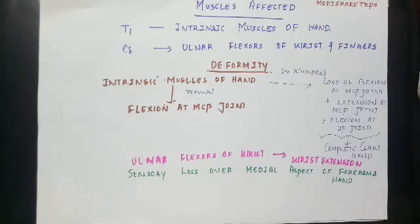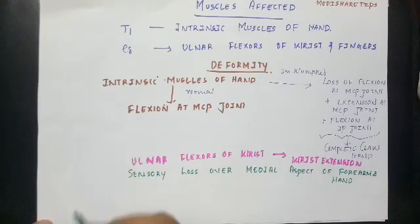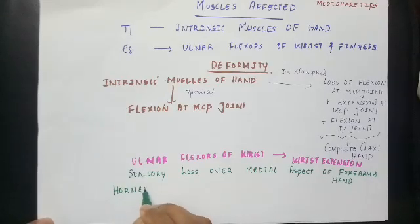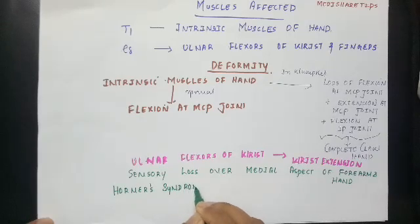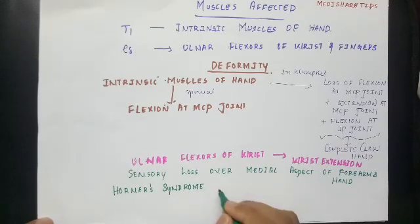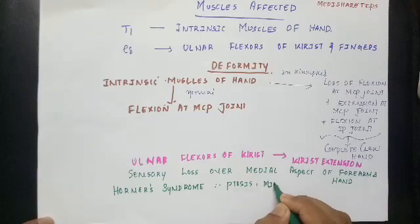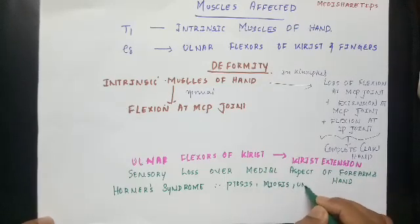Along with this, there will be sympathetic changes if T1 is injured proximal to its white ramus communicans to the T1 sympathetic ganglion. There will be Horner syndrome. Horner syndrome affects the head and neck and results in ptosis, miosis, and anhydrosis.